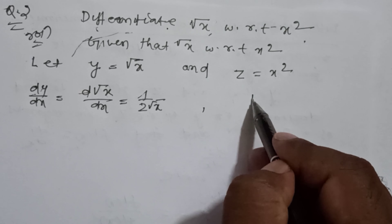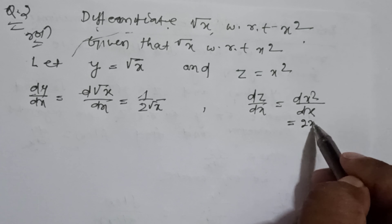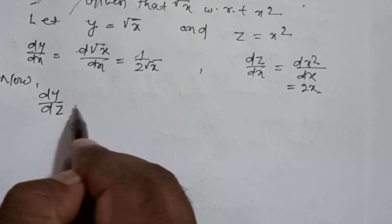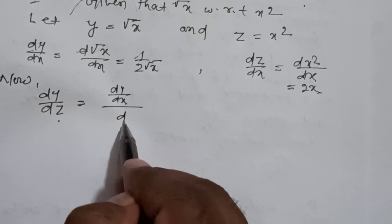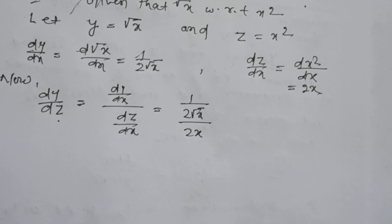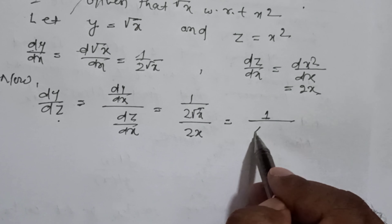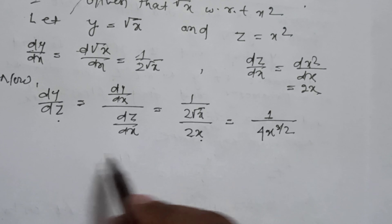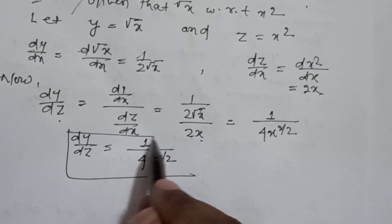And dz/dx = d(x²)/dx = 2x. Now dy/dz = (dy/dx) / (dz/dx), which means [1/(2√x)] / [2x] = 1/(4x · √x) = 1/(4x^(3/2)). So dy/dz = 1/(4x^(3/2)). This is the answer.